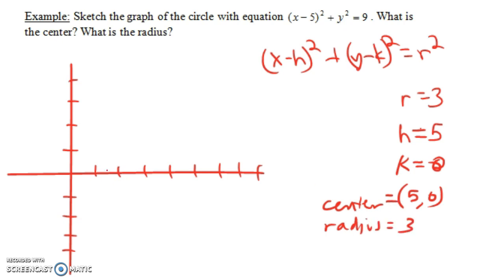So we could sketch that here. (5, 0) is over here, and we need to draw something that has a radius of 3. So I need to go maybe up 3, to the right 3, to the left 3, and down 3. And I'm not very good at drawing circles here on this, but... okay, that's good enough. Alright, so you have a circle centered at (5, 0), with a radius of 3.